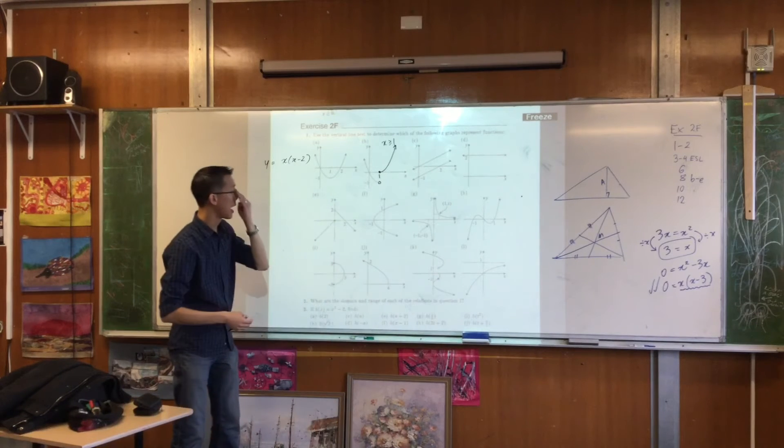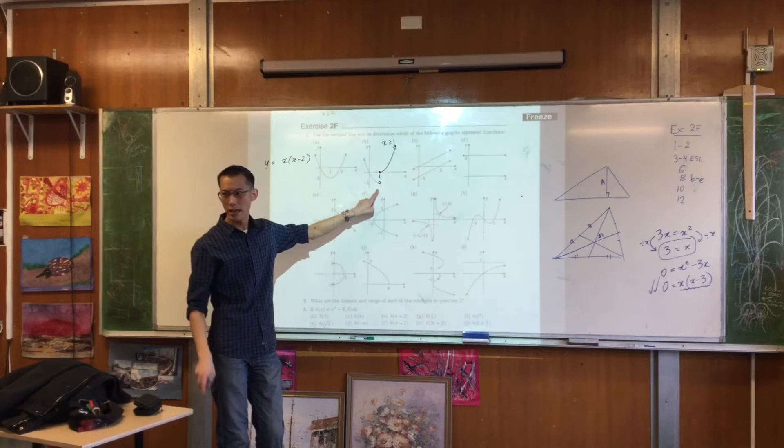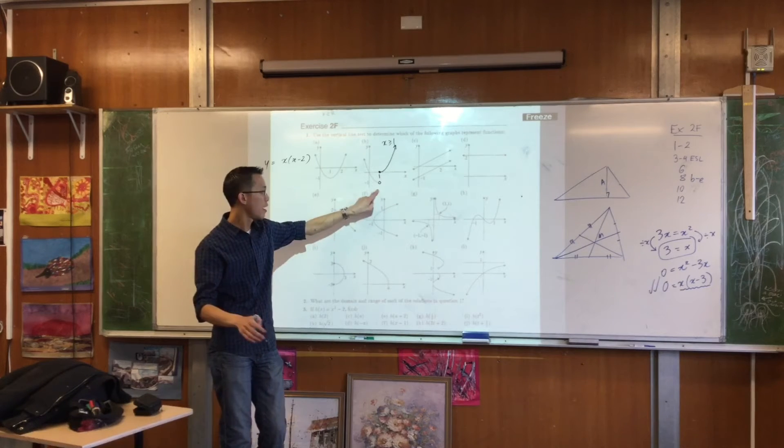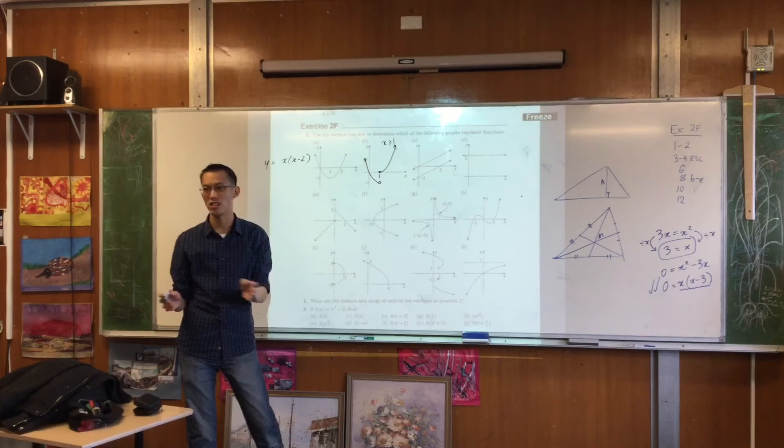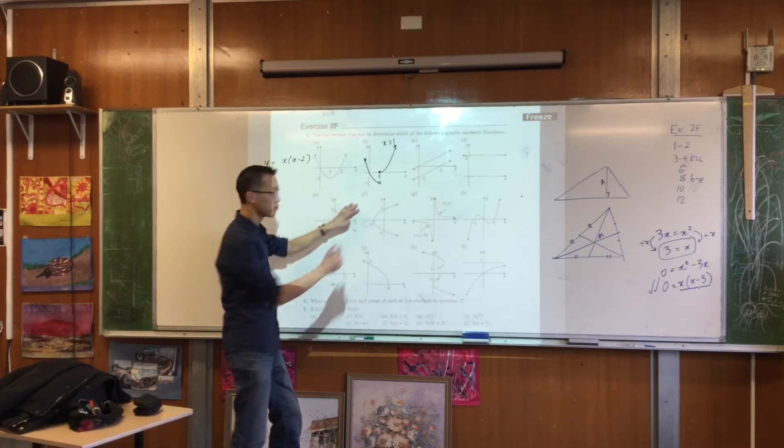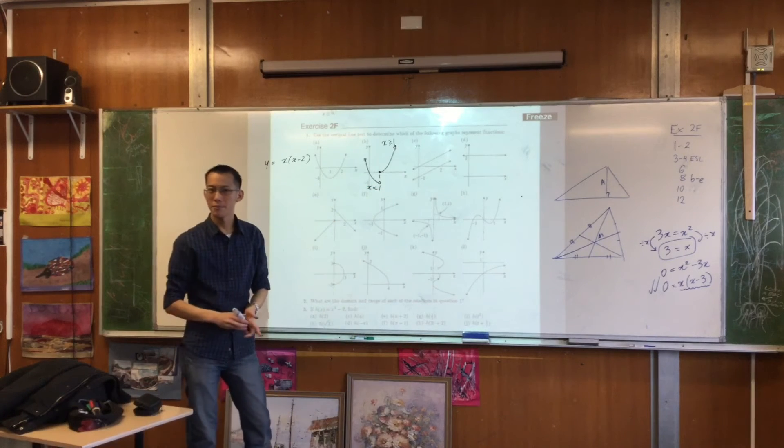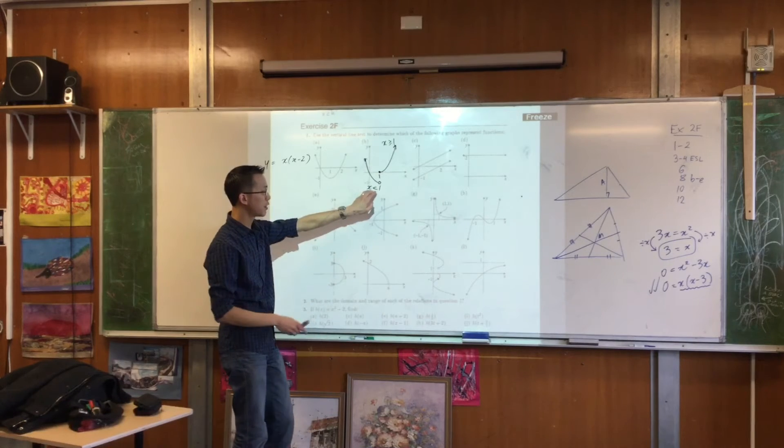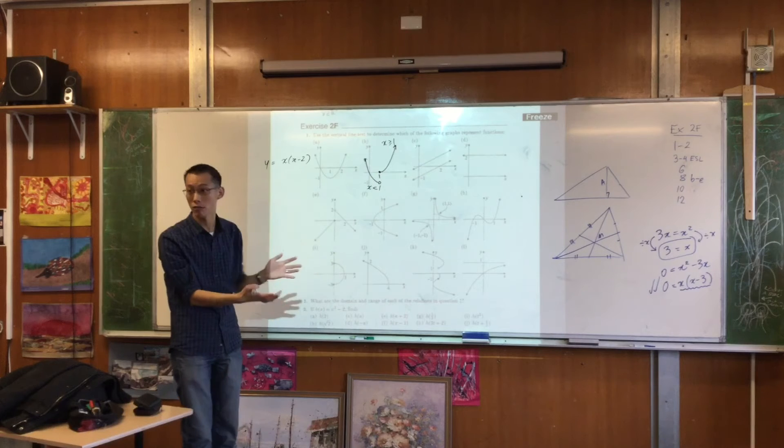Now when you move over to the left-hand side, you've got a hollow circle. What does that mean? It means don't include that point. But then it says go all the way to the left, and there's no indication that it ever stops. How would you describe the domain of this part? We don't include the value.